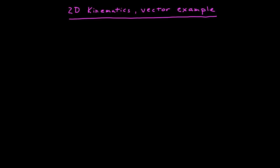I want to do an example looking at two-dimensional kinematics. It's going to be a particularly simple example, but I want to use it to really get into working with the vectors and understanding what that really means. So let's consider a trajectory that looks like this: 2t·î + 4ĵ.